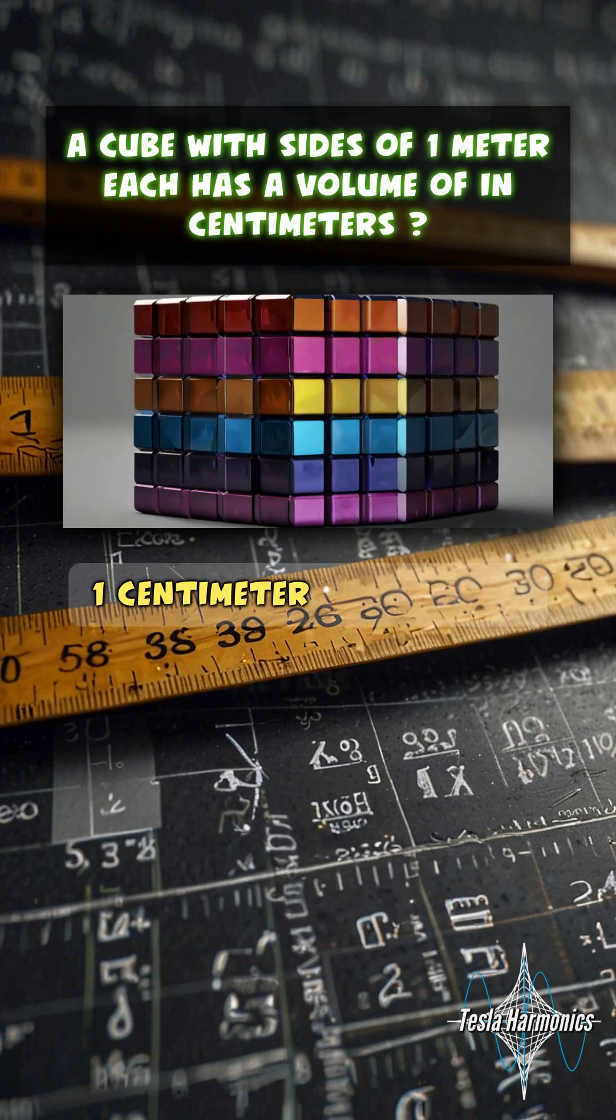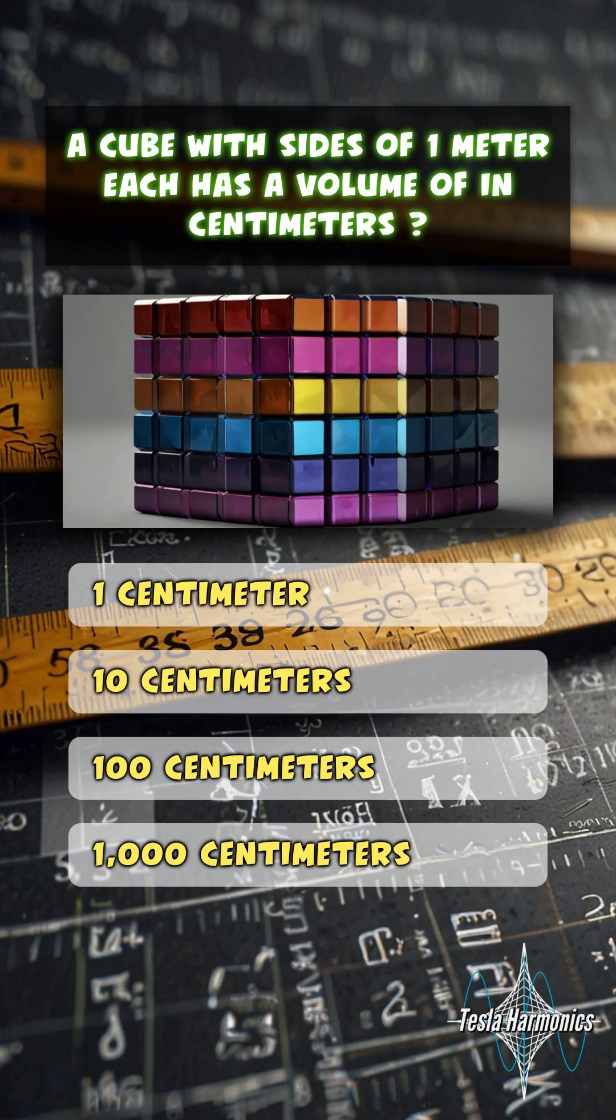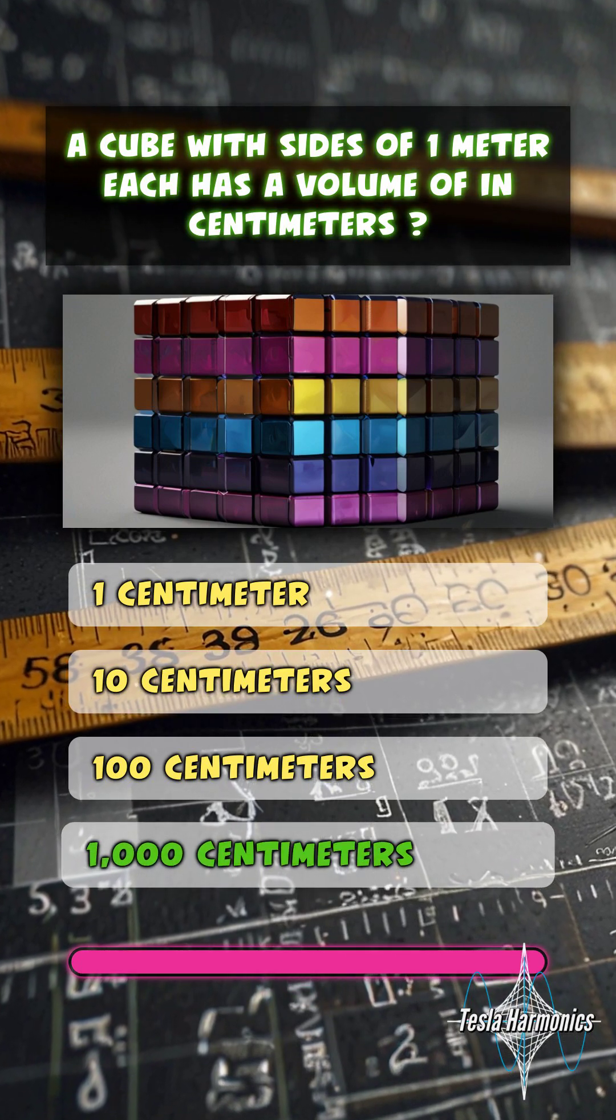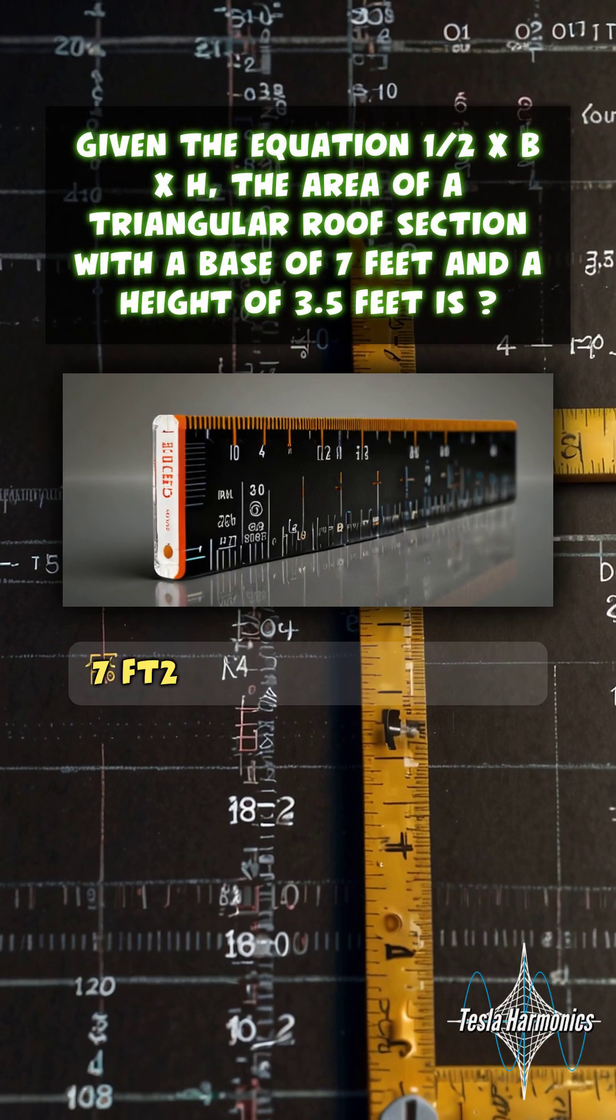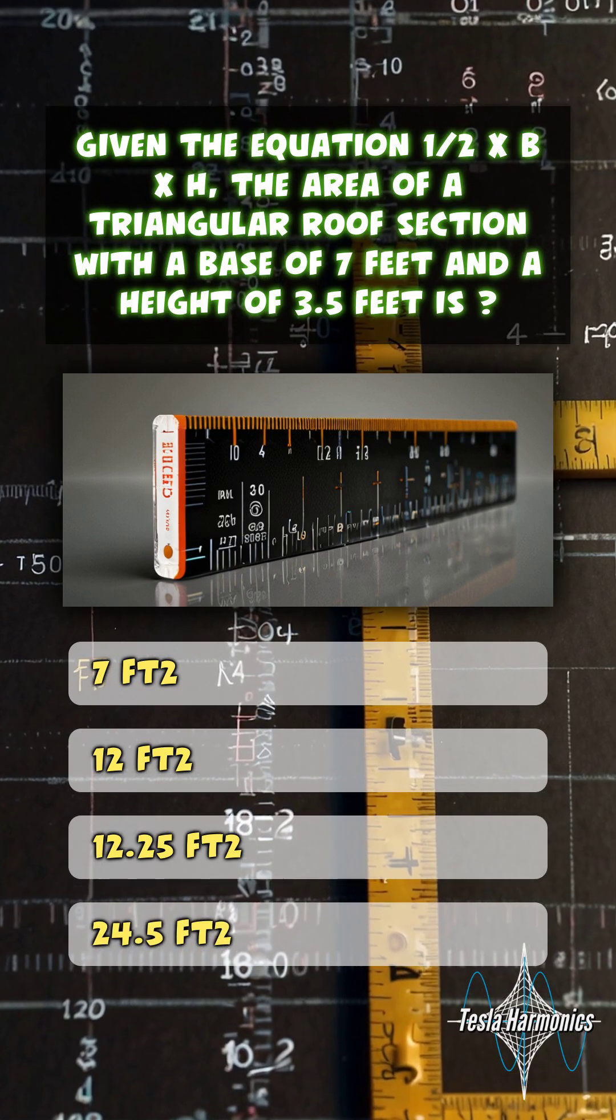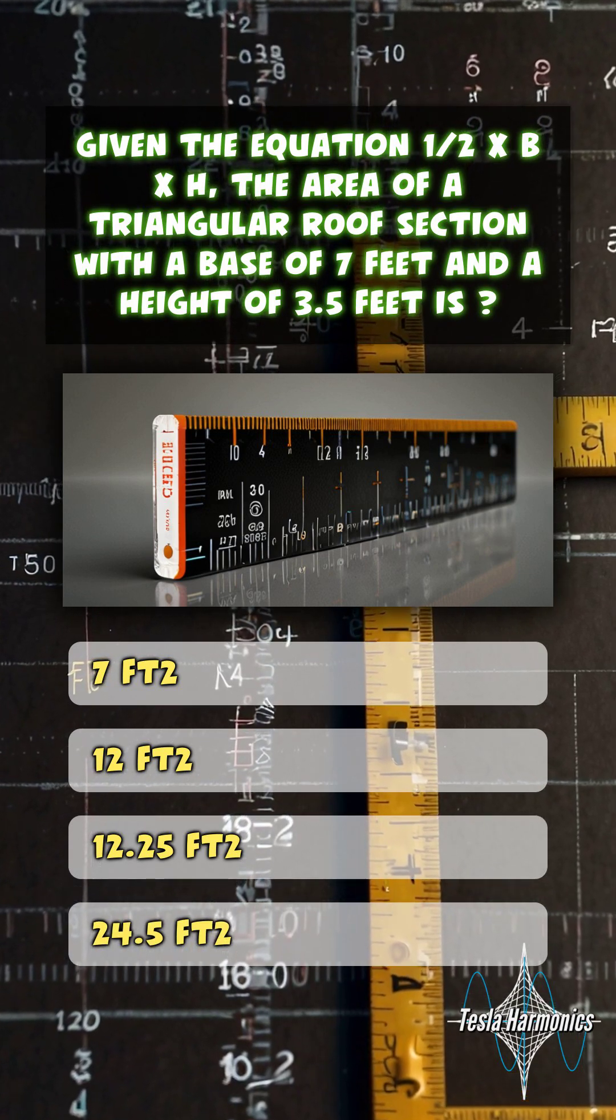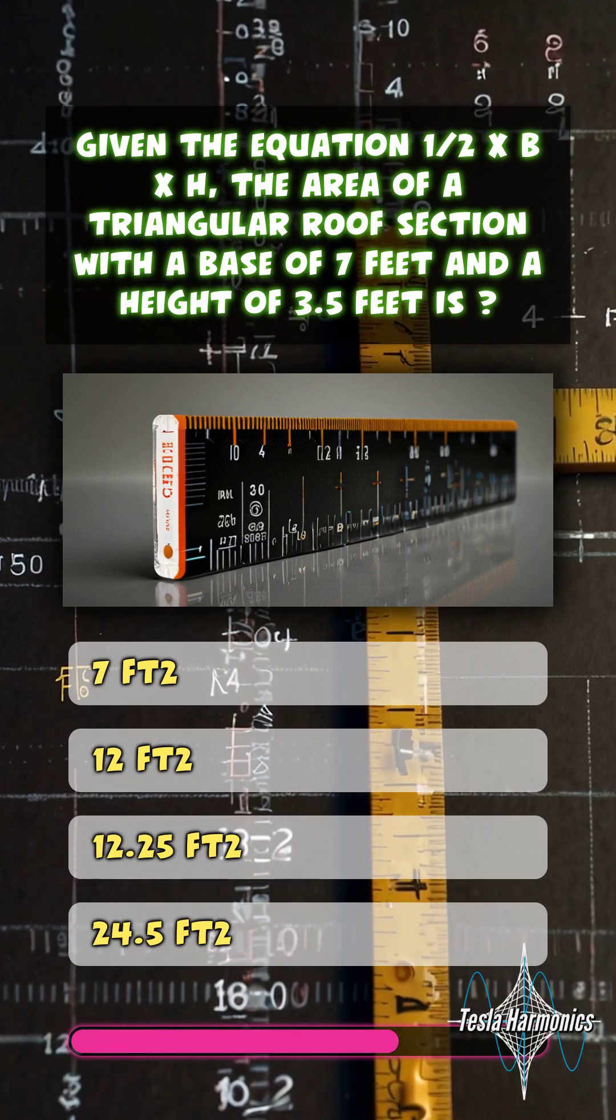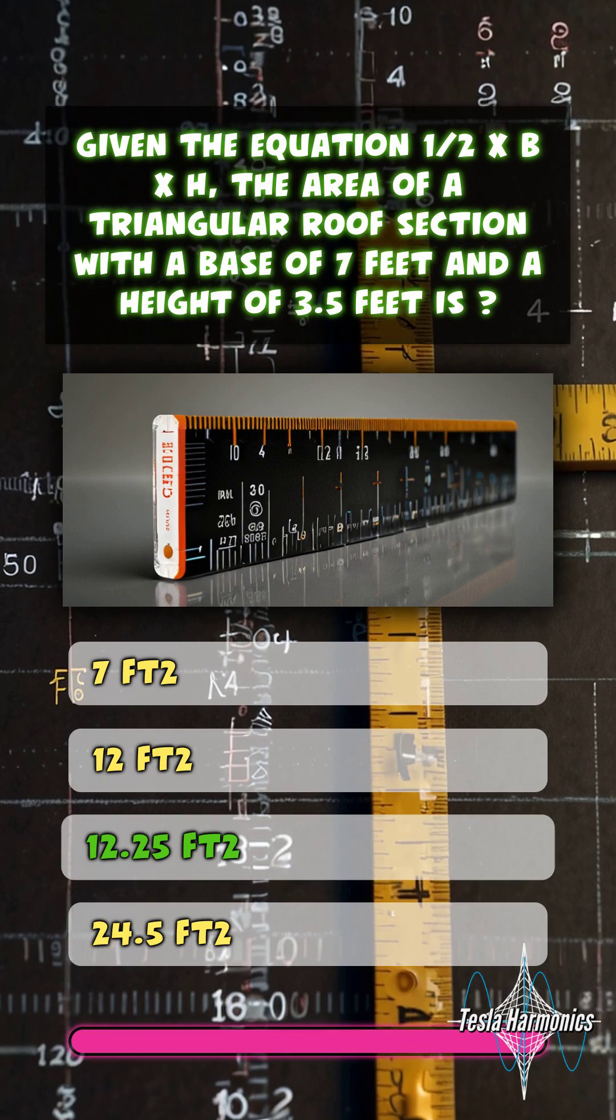A cube with sides of 1 meter each has a volume in centimeters of 1,000 centimeters. Given the equation 1.5 × b × h, the area of a triangular roof section with a base of 7 feet and a height of 3.5 feet is 12.25 square feet.